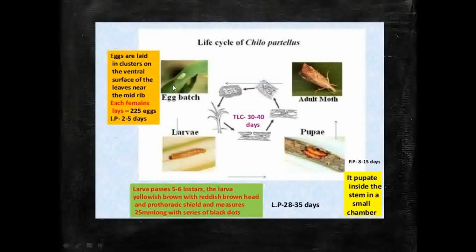After the incubation period of two to five days, the egg hatches into a larva. This larva passes through five to six instars. The larva is yellowish-brown with a reddish-brown head and prothoracic shield, measuring about 25 millimeters long, with a series of black dots on its body.